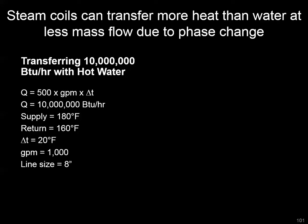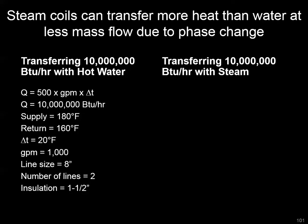For that hot water system we'd probably need an 8-inch supply line, plus a return, so two of those lines. ASHRAE would probably tell us to insulate at about an inch and a half. Comparing that with steam, we use a mass flow equation — we can't just look at delta T with a phase change, so we look at delta enthalpy and the pounds of steam moving across the system per hour.